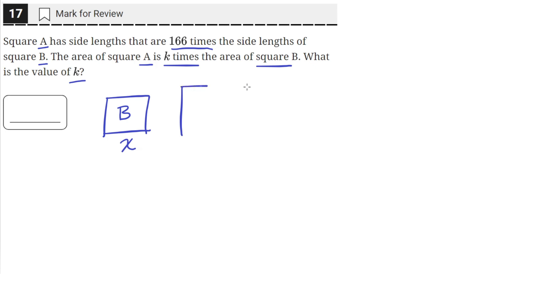And then we have square A, whose side lengths are 166 times the side lengths of square B. So the length of the side of this square is 166 times the length of square B's side.